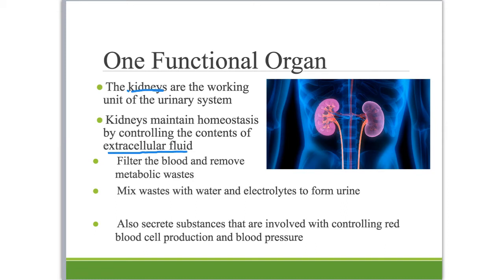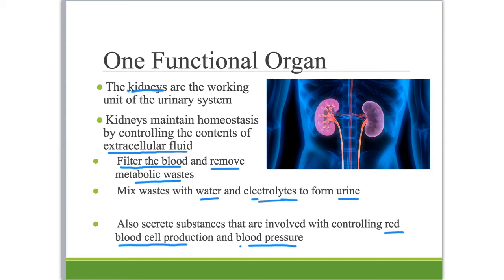All of that fluid is under the control of the kidneys. Basically, they do their job by filtering the blood, removing metabolic wastes, and mixing the wastes with just the right amount of water and electrolytes — things like sodium, chloride, and potassium — to form urine. The kidneys also produce a hormone that triggers red blood cell production, an enzyme important in controlling blood pressure, and help activate vitamin D to keep your bones strong.